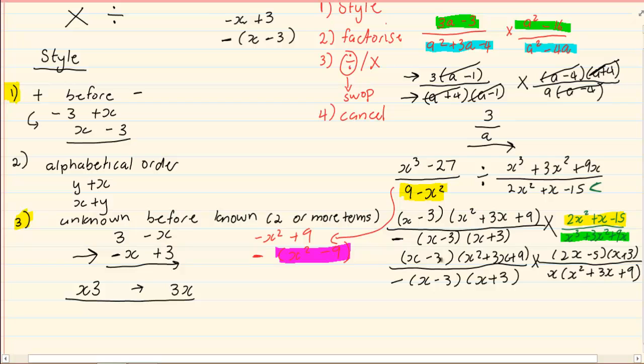Okay. Now we can cancel the x minus 3 with the x minus 3. x squared plus 3x plus 9, x squared plus 3x plus 9, x plus 3 over x plus 3. What are we left with? On the top line, we are left with 2x minus 5 over negative x. And that would be your final answer.